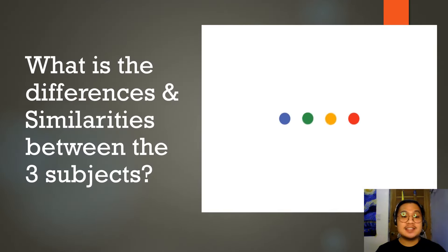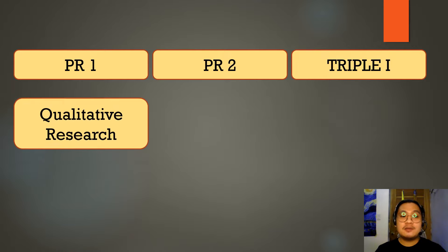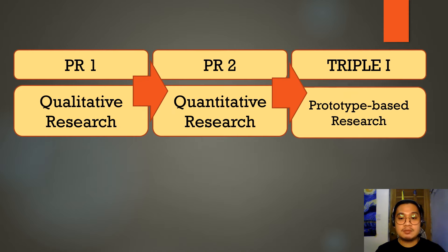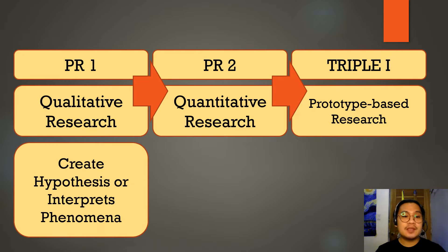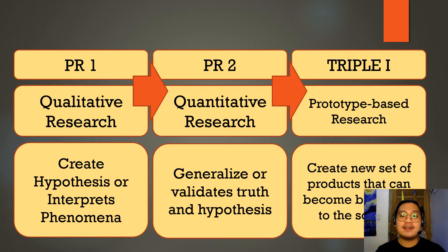What are the differences and similarities between the three research subjects in Senior High School? You have PR1, PR2, and IIII. PR1 encompasses qualitative research; PR2 covers quantitative research; and IIII is prototype-based research. PR1 intends to create hypotheses or interpret phenomena. PR2 intends to generalize or validate truth and hypothesis. While IIII focuses on the creation of new products that can become beneficial to society.